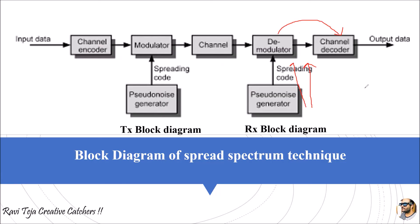If the pseudo noise code from the transmitter matches the code generated by the receiver, the signal is accepted; otherwise it is rejected. When accepted, the signal goes to the decoder, which decodes the data and the pure original form of the data is obtained at the output. This is how the spread spectrum technique works.